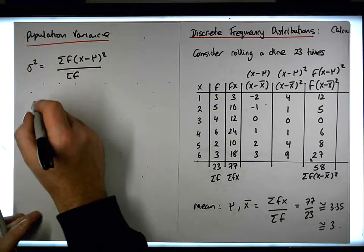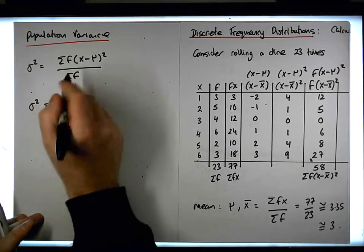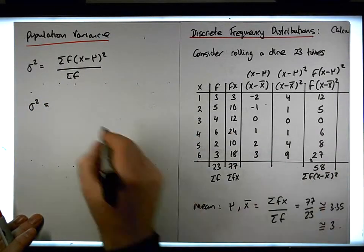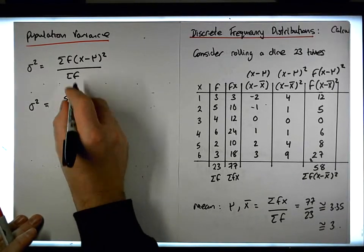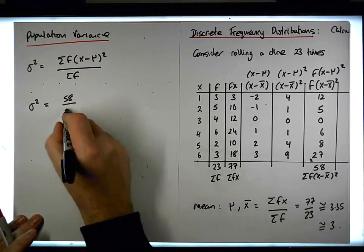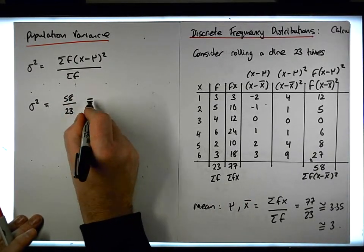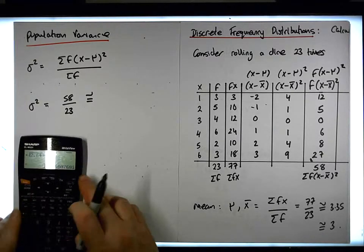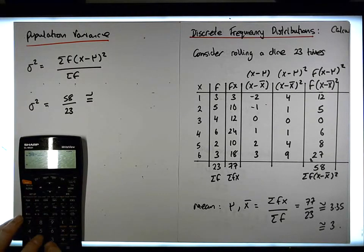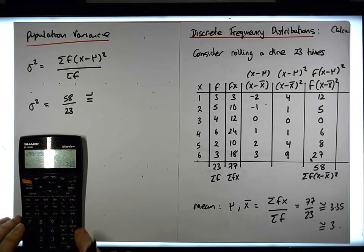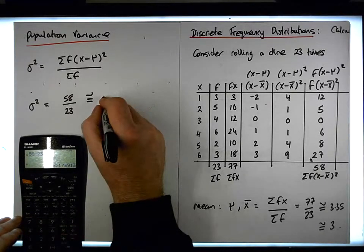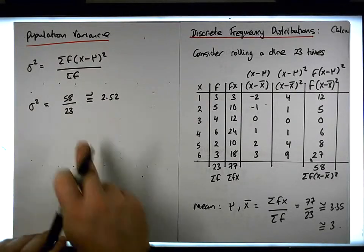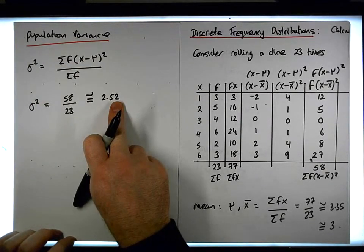So sigma squared must be equal to the sum of the frequencies times x minus mu squared, which is 58, divided by the sum of the frequencies, which is 23. That gives us a value of 58 divided by 23, which gives us 2.52. So the population variance is 2.52.